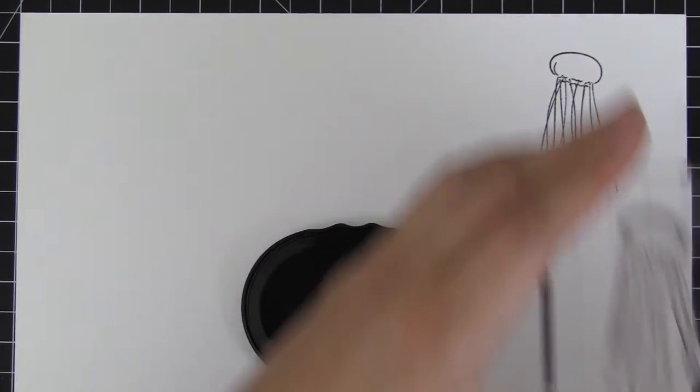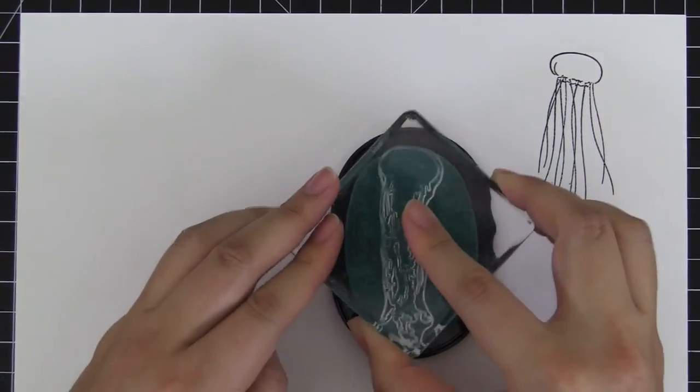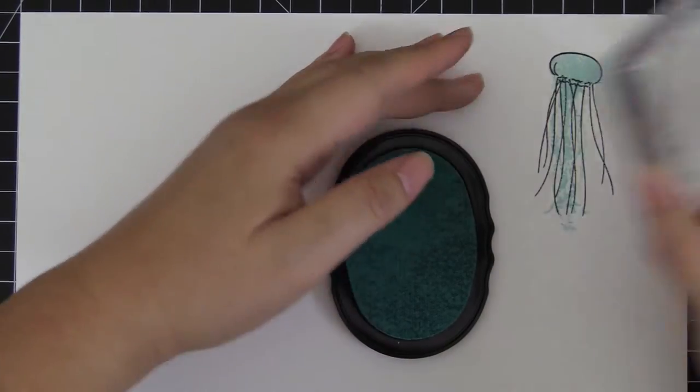This is Painted Jellyfish Stem Set from Altenew. This is a 4x6 stem set with 12 individual stems.